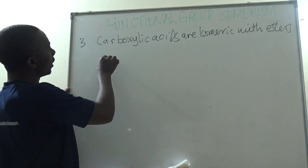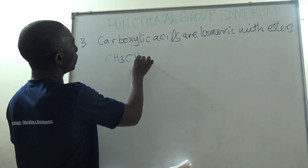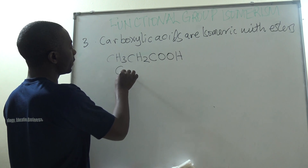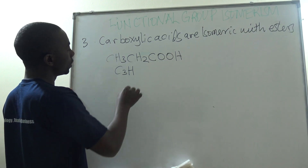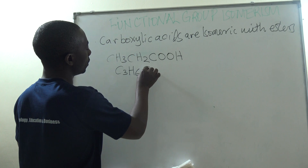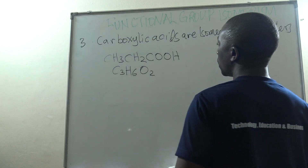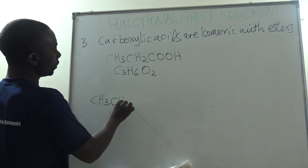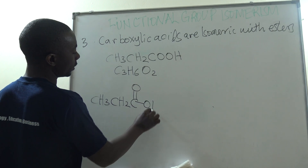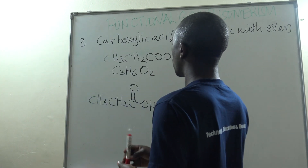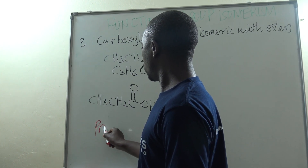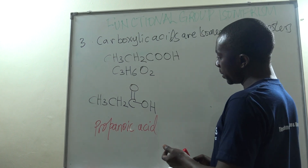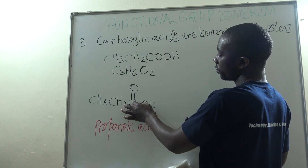Let us take a close look at a carboxylic acid like CH3CH2COOH, or represented as the molecular formula C3H6O2. That is a carboxylic acid. We can represent it showing the functional group as CH3CH2-C(=O)-OH. Since it has three carbon atoms, we call it propanoic acid. This carboxylic acid can rearrange itself so that the functional group is positioned between the two carbon atoms.